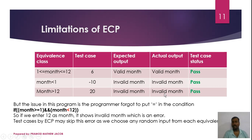Now, let's see this class partitioning process. In this case, we will test these three conditions. So in this case, there is no error. Now, if the programmer has an error in the boundary condition, it will be less than or equal to 12.